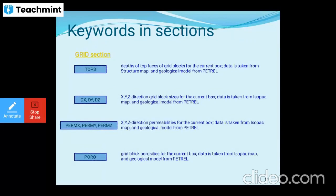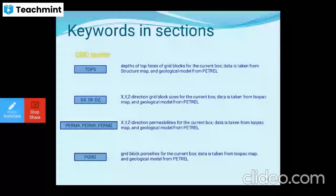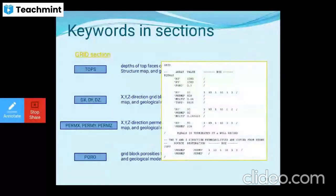In the GRID section, TOPS gives the depths of the top faces of grid blocks — this data is taken from structural maps and geological models from Petrel. DX, DY, DZ give grid block sizes in each direction, also from isopach maps or geological models. PERMX, PERMY, PERMZ give permeabilities in each direction, and PORO gives grid block porosities — all taken from isopach maps and geological models from Petrel.